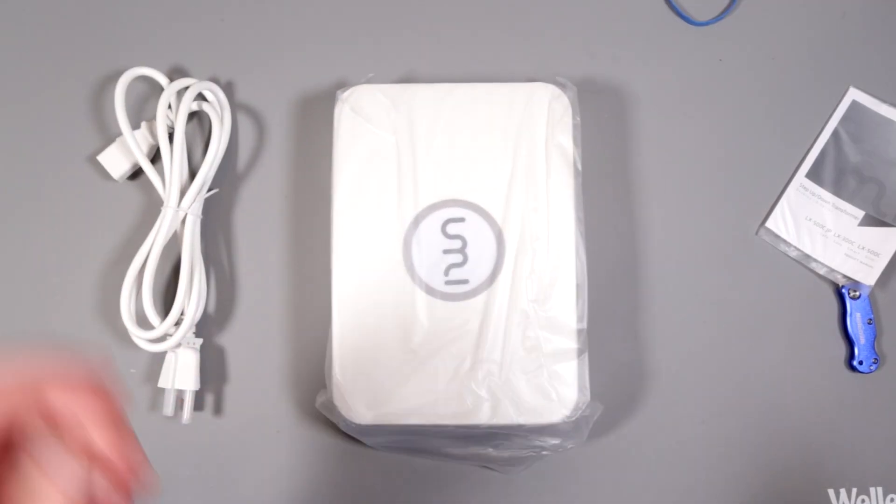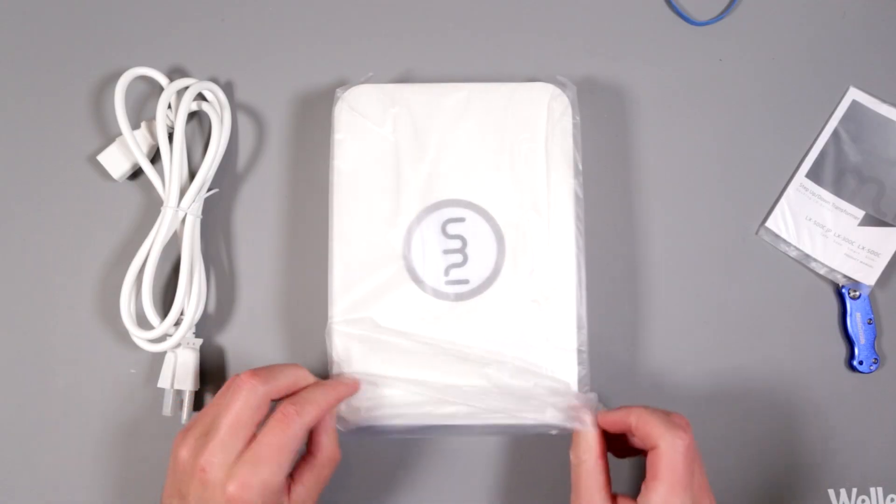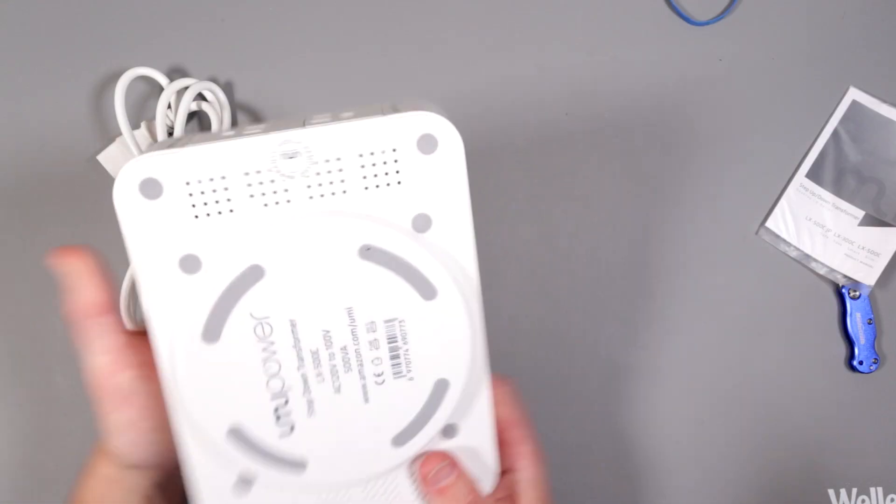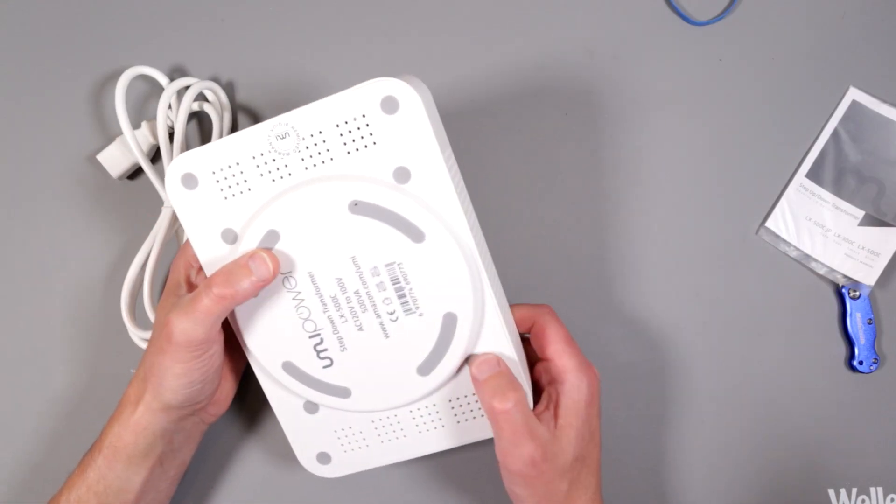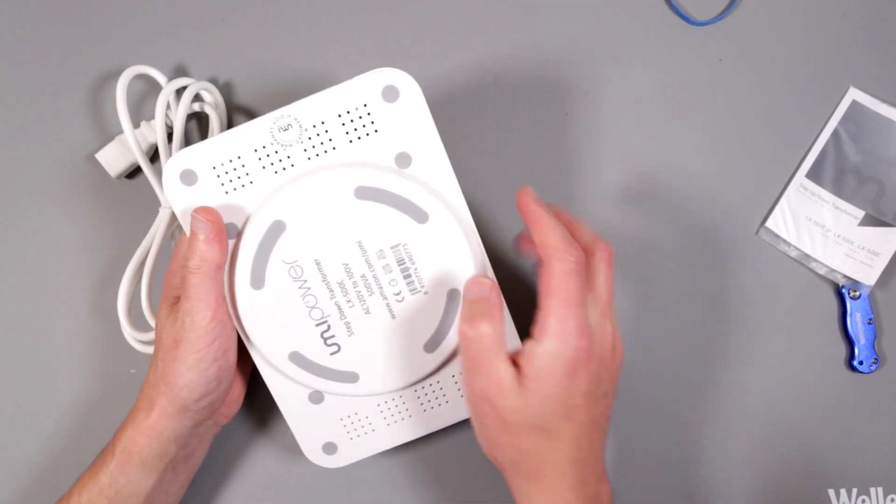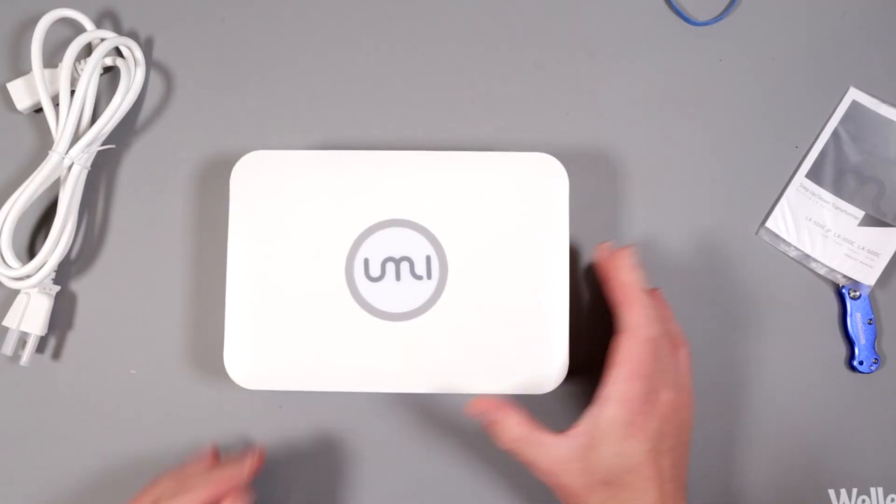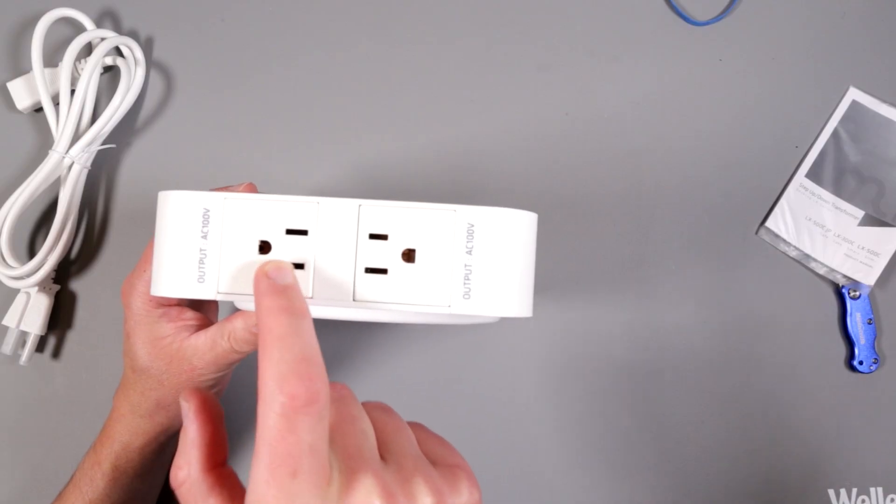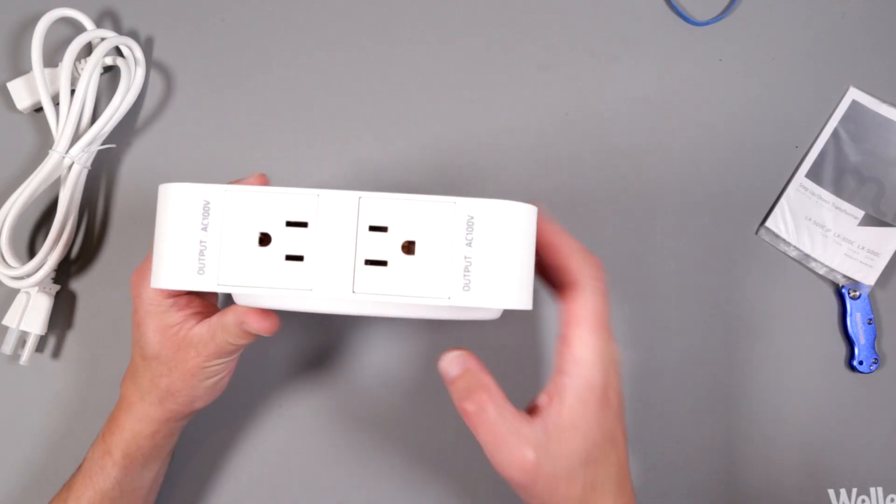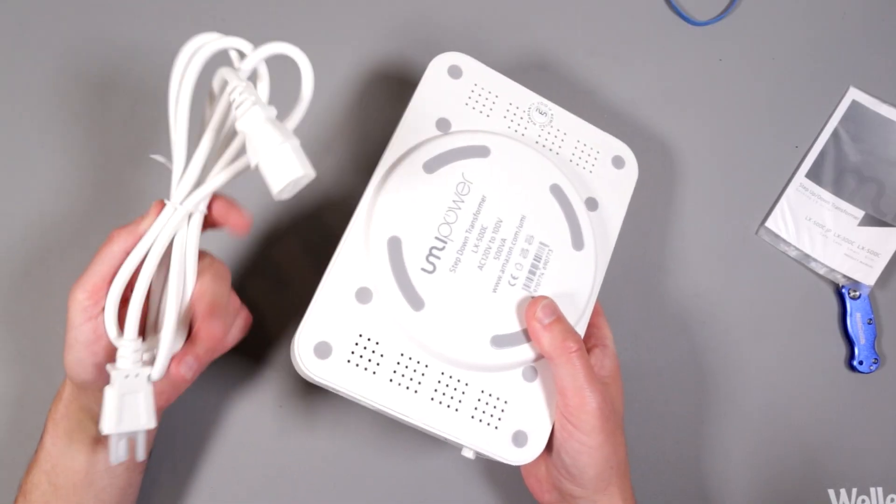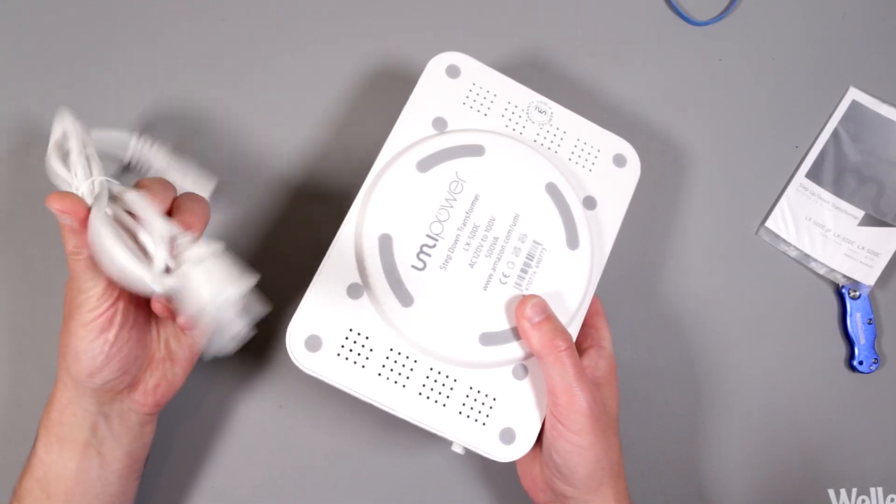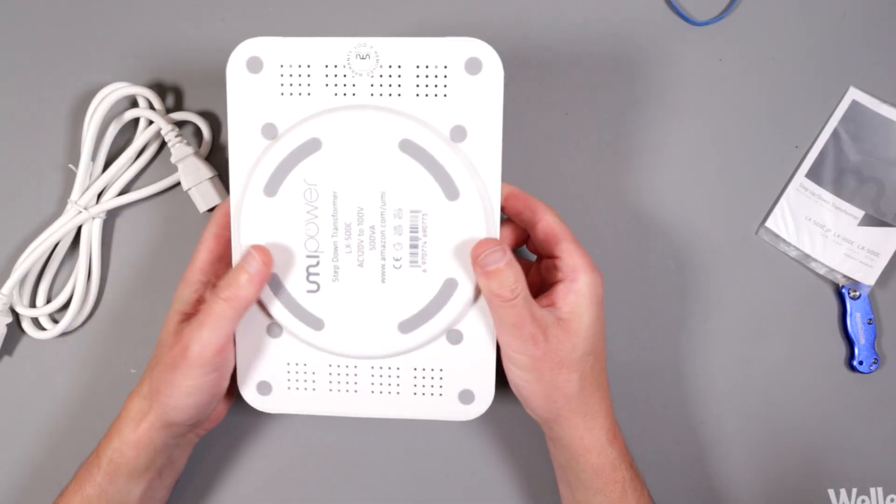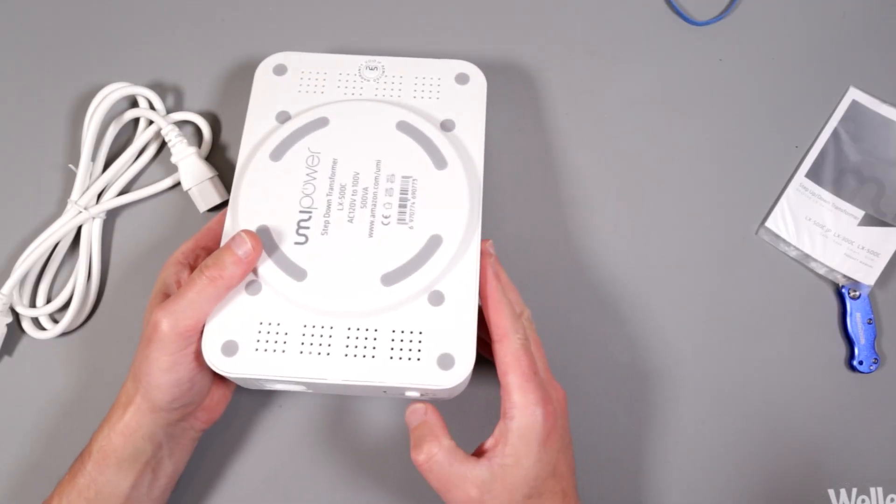The reason I got this is because I have to power some Japanese equipment and this thing is clearly nice and sleek looking device. Alright, there are some silicone pads here. It's gonna be sitting nice on the desk or anywhere it's supposed to be sitting. It has two outputs and they're clearly marked as 100 volts, AC 100 volts.